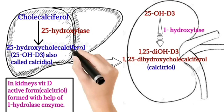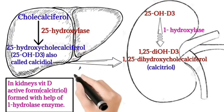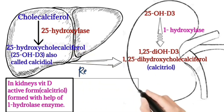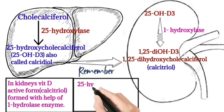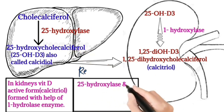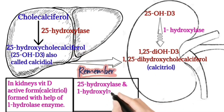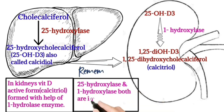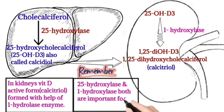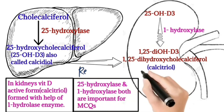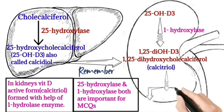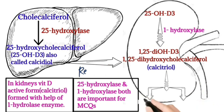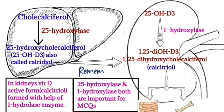Remember, students: both 25-hydroxylase and 1-hydroxylase are important for MCQs. The active form, calcitriol, then travels to the intestine and bones to exert its effects.